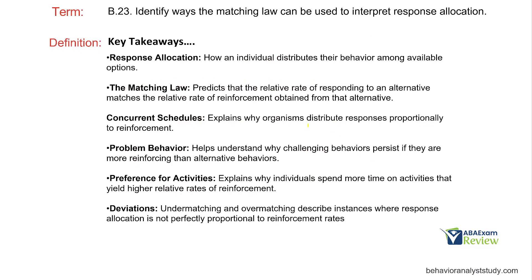Key takeaways: response allocation describes how an individual distributes their behavior among options. Matching law predicts the relative rate of responding matches the relative rate of reinforcement. If door number one is FR-10, door number two is FR-1, and door number three is FR-50 — we're likely going to door number two, then door number one, and door number three least of all.